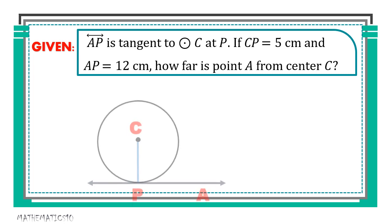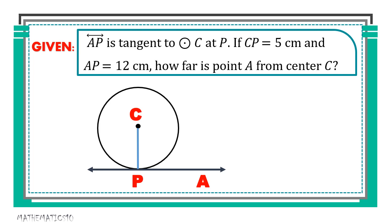For our first example, given this illustration with the corresponding data: line segment CP is 5 centimeters and line segment AP is 12 centimeters. We want to know how far point A is from center C. Drawing a line segment connecting point A to C, we can now form a triangle. We're looking for the hypotenuse side of the triangle.